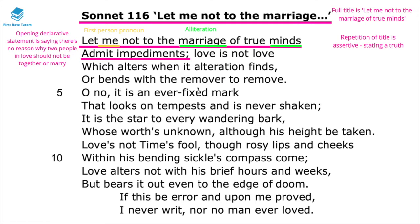The alliteration of 'marriage' and 'minds' emphasizes the importance of this union between two people who are truly in love. This sonnet also has a very particular rhyme scheme: ABAB in the first four lines, then CDCD in the following lines, EFEF after that, and ending with a GG couplet — a distinctly Shakespearean rhyme scheme.